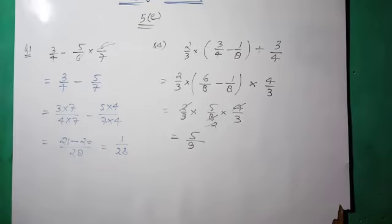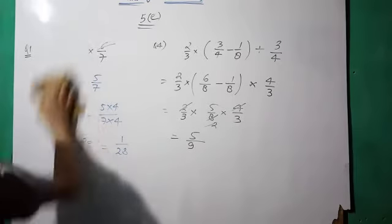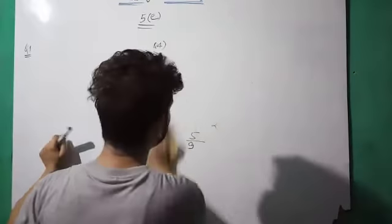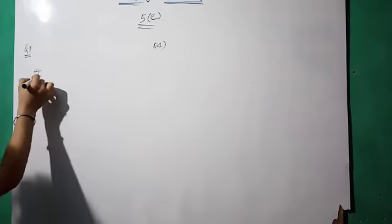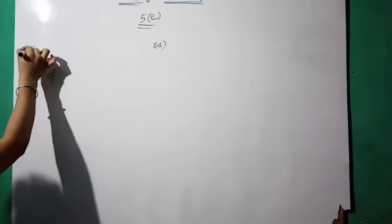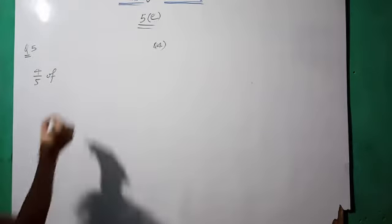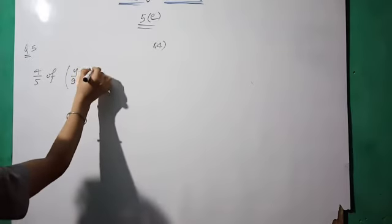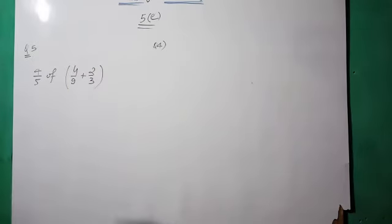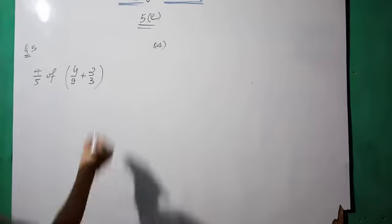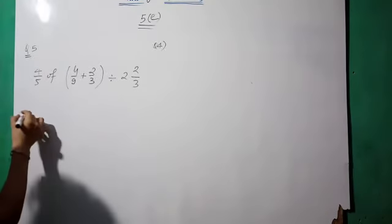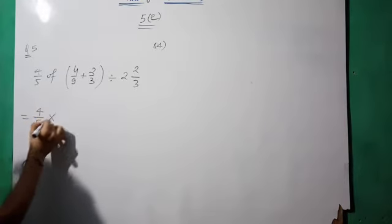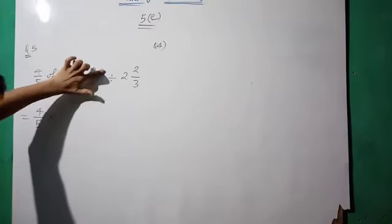Question five: four by five of four by nine plus two by three, divide by two whole two by three. Remember: 'of' means multiply and 'by' means divide. So first simplify: four by five multiplied by four by nine. Then find the LCM of two by three and four by nine, which is nine.